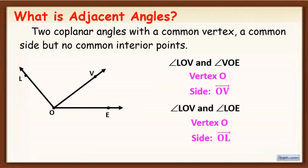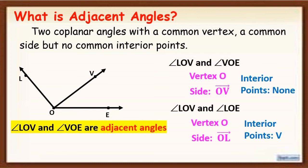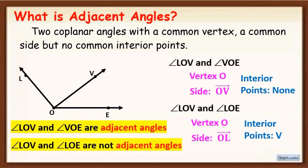So remember that adjacent angles are two coplanar angles with a common vertex and a common side, but no common interior points. Check angle LOV and angle VOE — there are no interior points that can be found. While angle LOV and angle LOE has an interior point, which is V. Therefore, angle LOV and angle VOE are adjacent angles, and angle LOV and angle LOE are not adjacent angles.